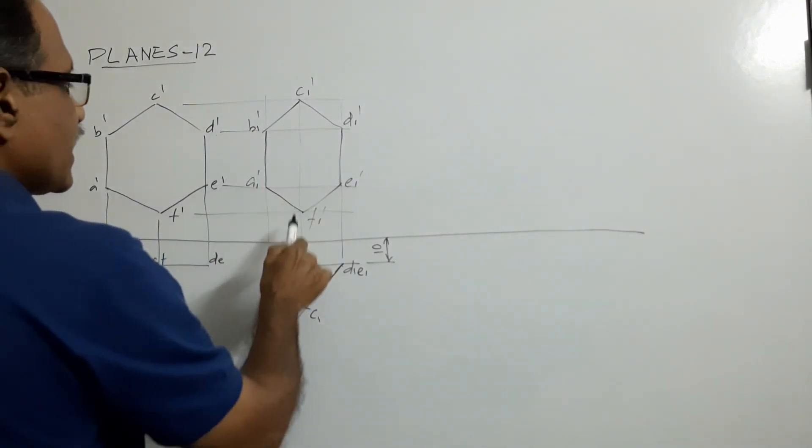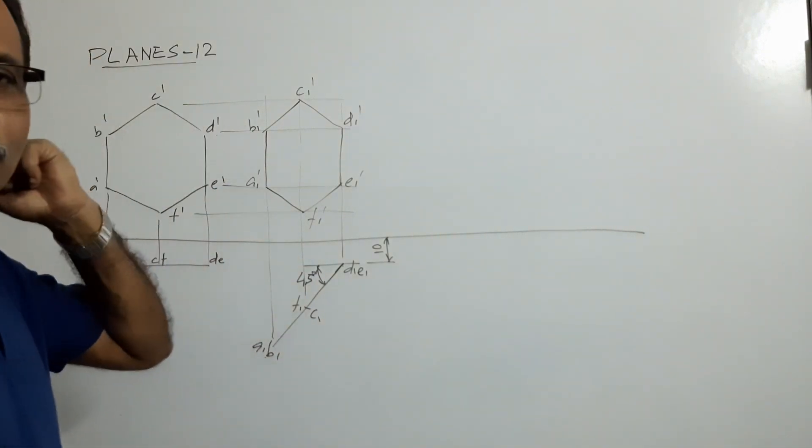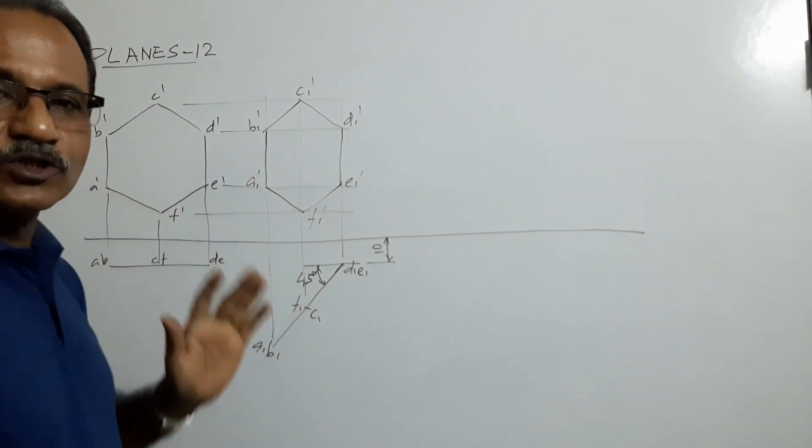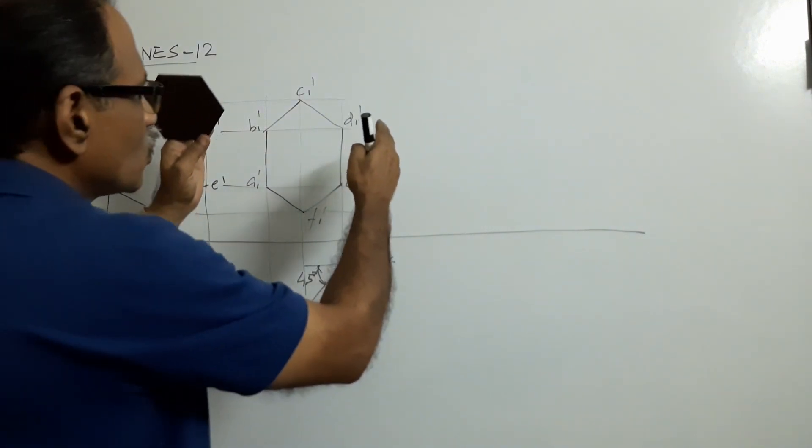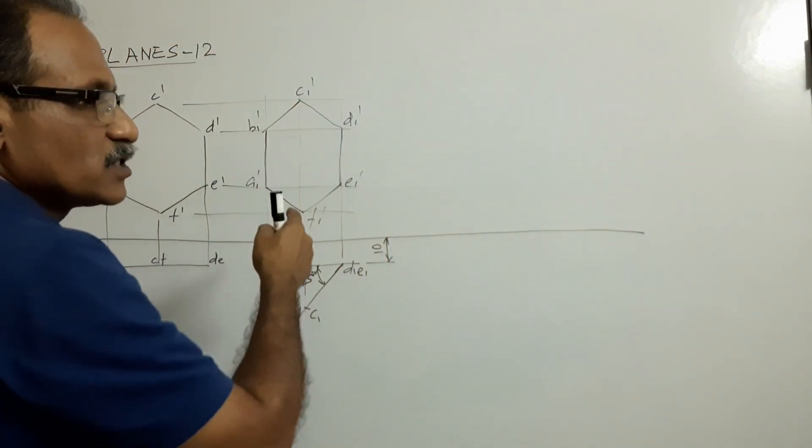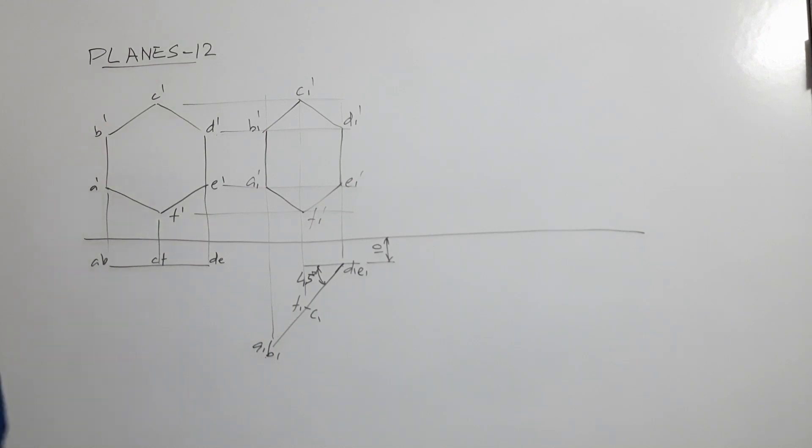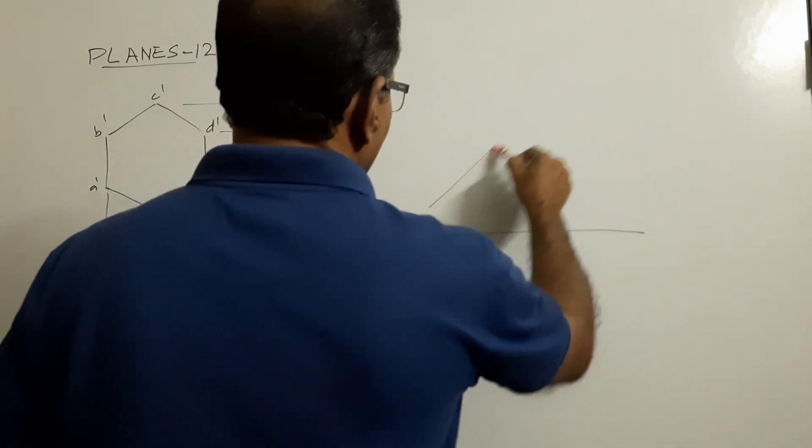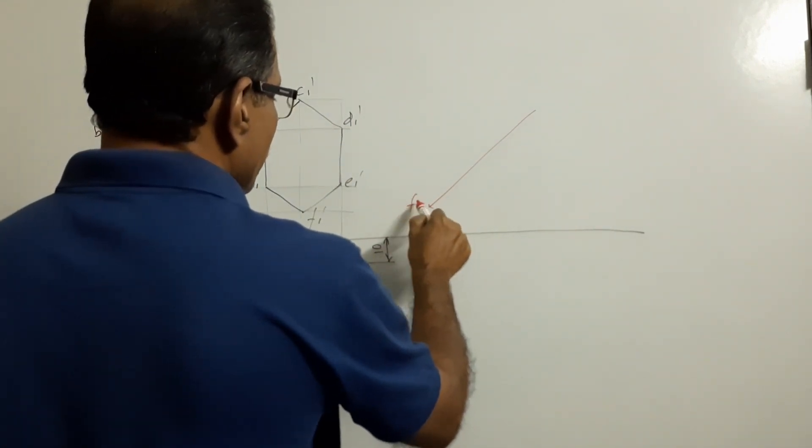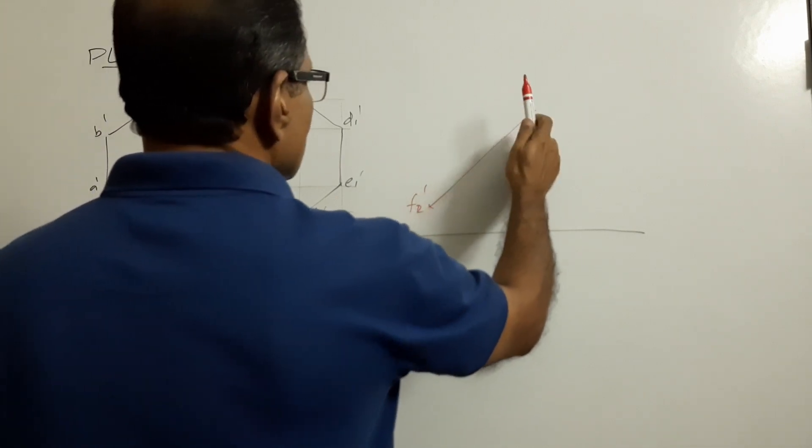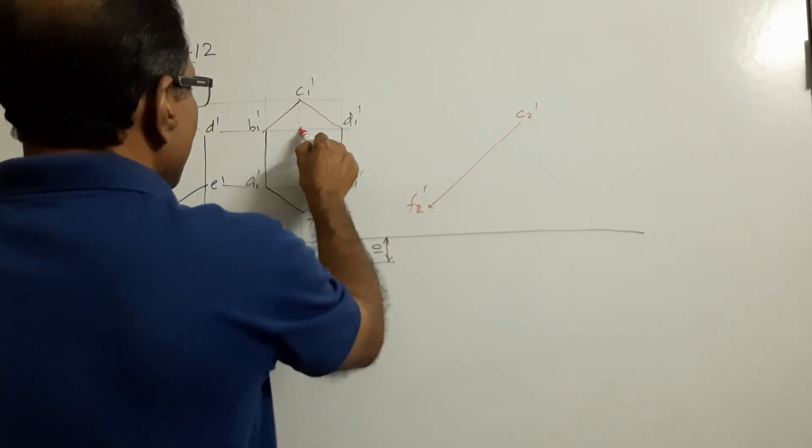Now, how is the diagonal FC? The diagonal FC is parallel to VP. Since it is vertical, it is perpendicular to HP. Rotate the whole elevation such that FC becomes 45 degrees to xy. Draw a 45 degree line, on that locate f1, f2 dash, c2 dash. Take this distance and mark to get c2 dash. Locate these two points.